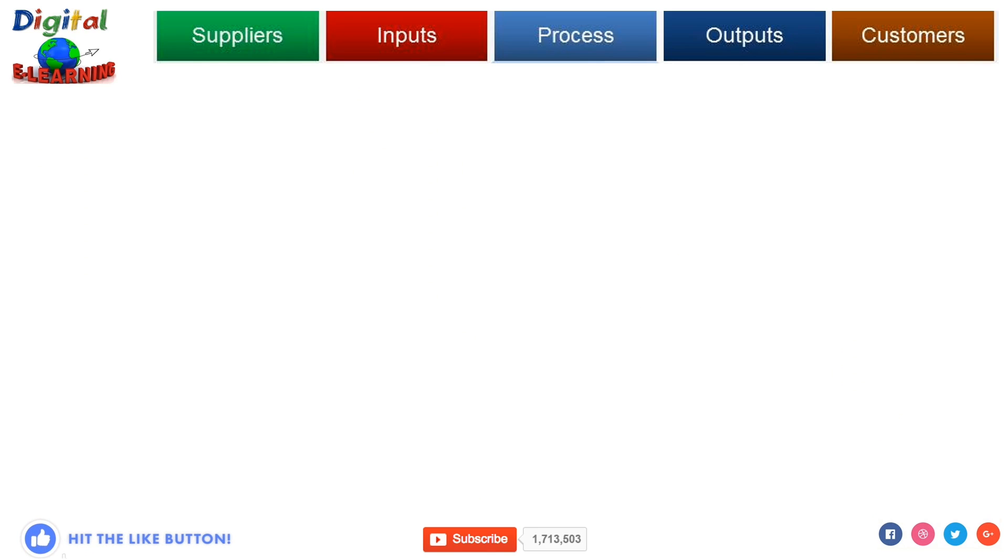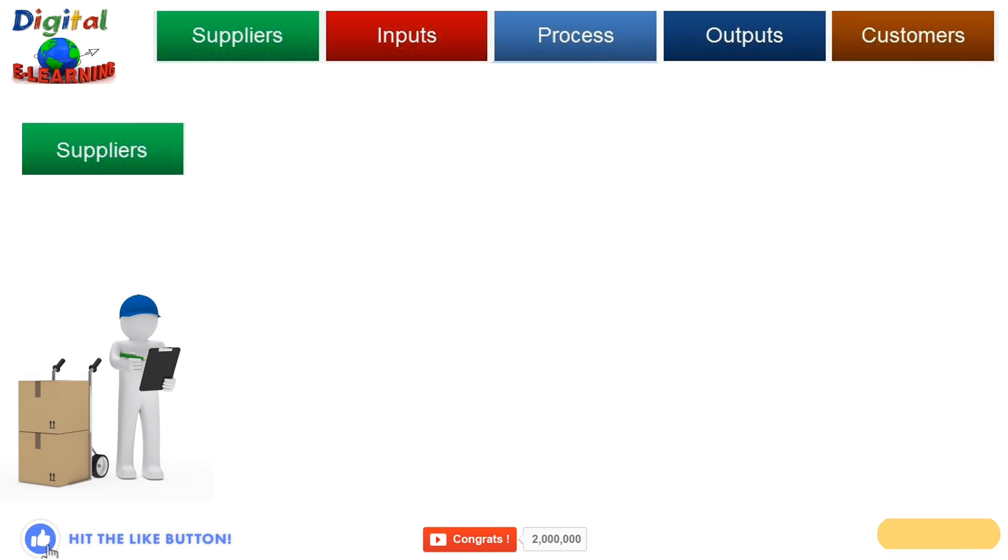Let us look at all the elements of a SIPOC diagram one by one. We'll start first with Supplier. This is the party that supplies product or services to the process. Your supplier should be able to address the needs or specification of your input. They can be both internal or external parties. They can be a supplier of raw material or knowledge, skill, and information.